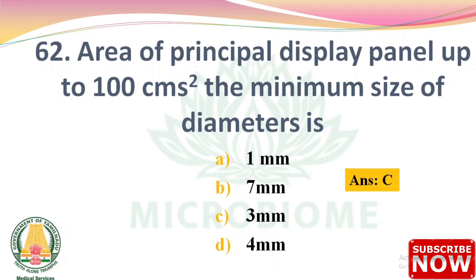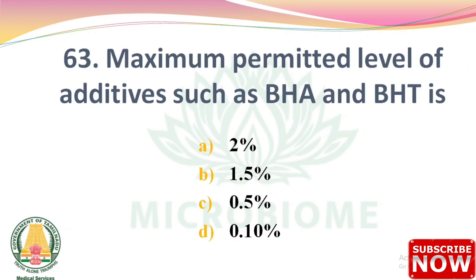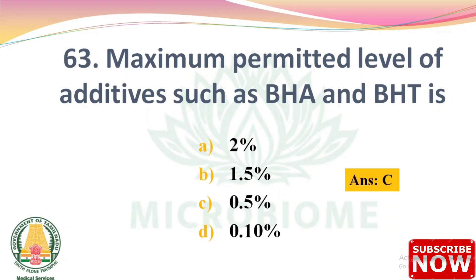Next question: the maximum permitted level of additives such as BHA and BHT is — options: 2%, 1.5%, 0.5%, 0.10%. The right answer is Option C: 0.5%.